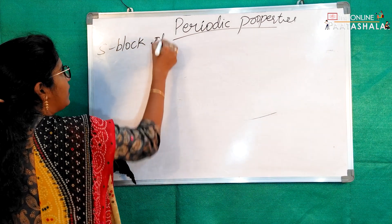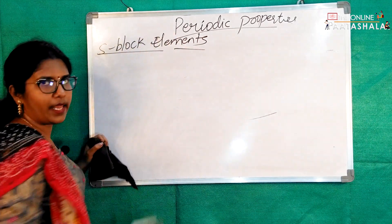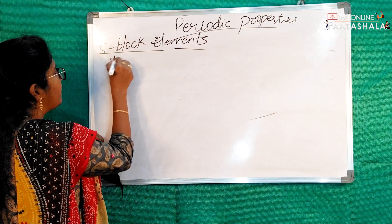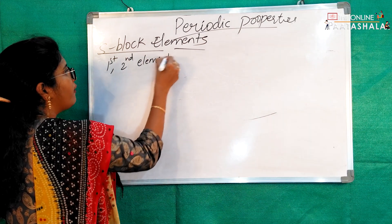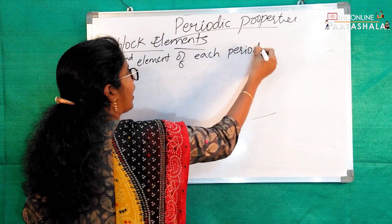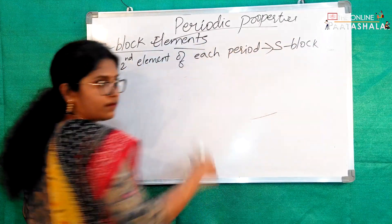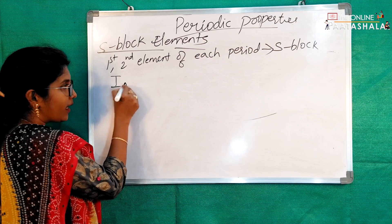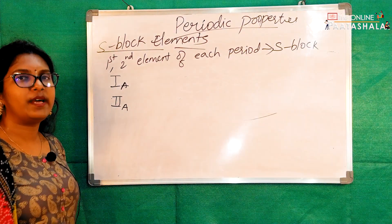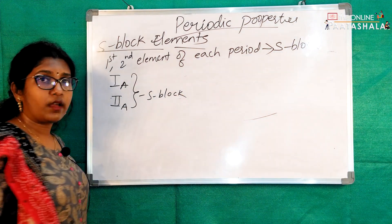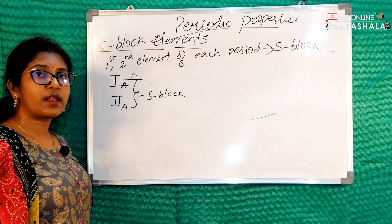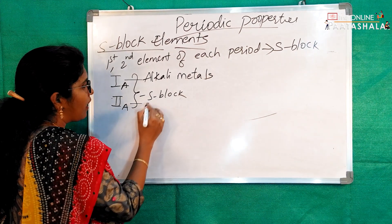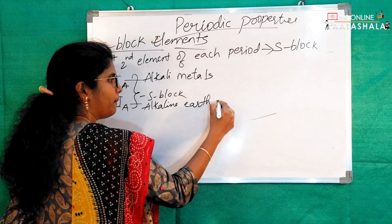First, going to S block elements: the first and second elements of each period are S block elements. You can also describe them as 1A group elements and 2A group elements. The 1A group elements are known as Alkali Metals.